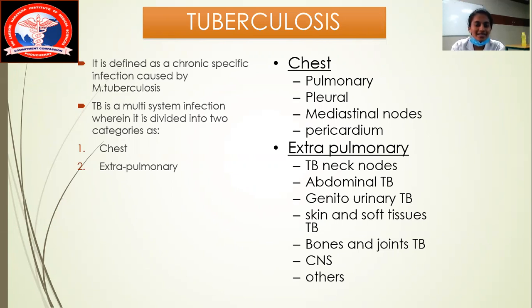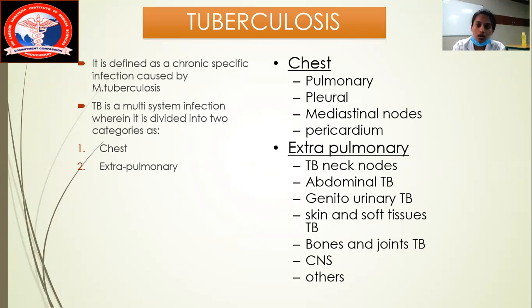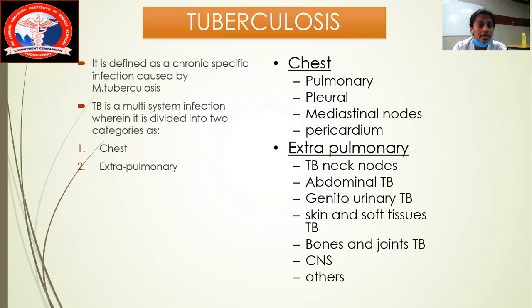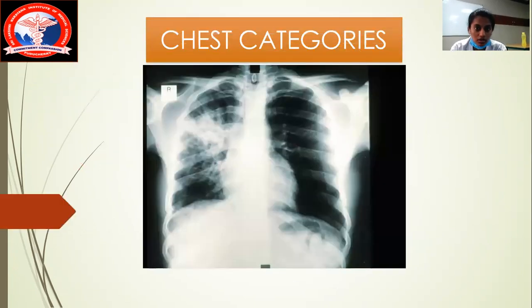Extra-pulmonary tuberculosis has many manifestations. The most common extra-pulmonary manifestation is TB neck nodes, also called tuberculosis lymphadenitis. Other types include abdominal tuberculosis, genitourinary tuberculosis, skin and soft tissue tuberculosis, bones and joint tuberculosis, and CNS tuberculosis such as tuberculous meningitis.